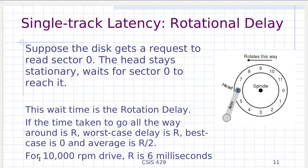For a 10,000 RPM drive, the time for one full rotation R is 6 milliseconds, so the average rotational delay is 3 milliseconds. For 7200 RPM it's about 4 milliseconds on average. These numbers give a concrete sense of how much time is involved in accessing data on a hard drive.